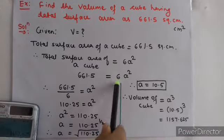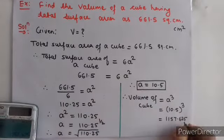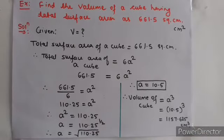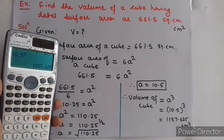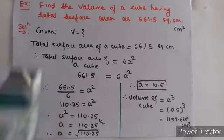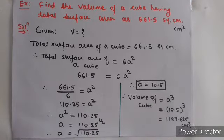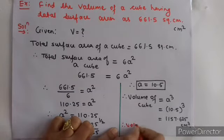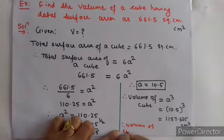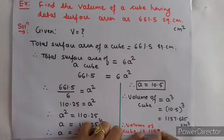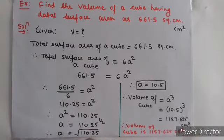यहाँ पर unit लिखना है. तो unit क्या है? दिया था centimeter, तो volume होने के कारण unit होगी centimeter cube. So last में लिखेंगे: therefore, volume of cube is 1157.625 centimeter cube.